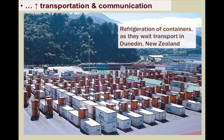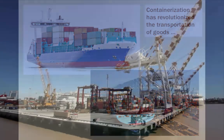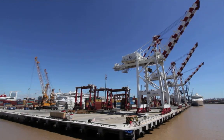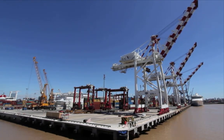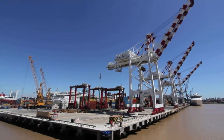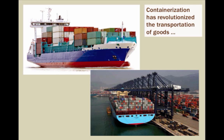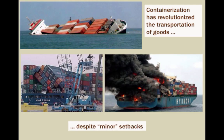Beginning in the 1950s, this system involves transporting shipping containers of standardized dimensions made of steel. These containers can be loaded and unloaded, stacked, transported, and transferred from one mode of transportation to another — whether ships, rail, or trucks. The handling system is completely mechanized with cranes and forklifts, so it is done with relatively small amounts of labor. These containers are numbered and tracked using computerized systems, delivering goods around the world despite minor setbacks.